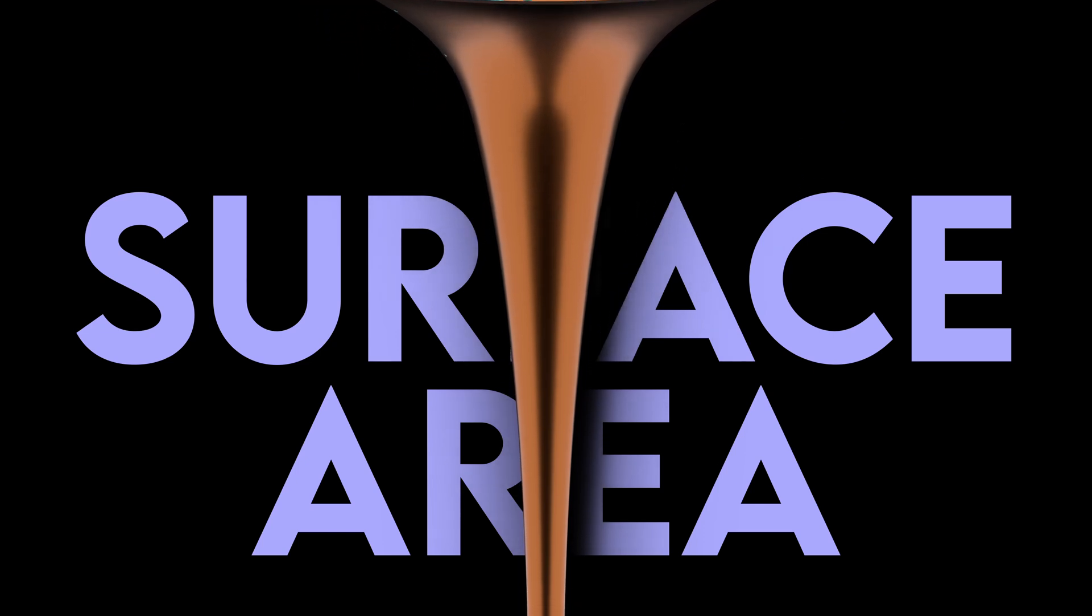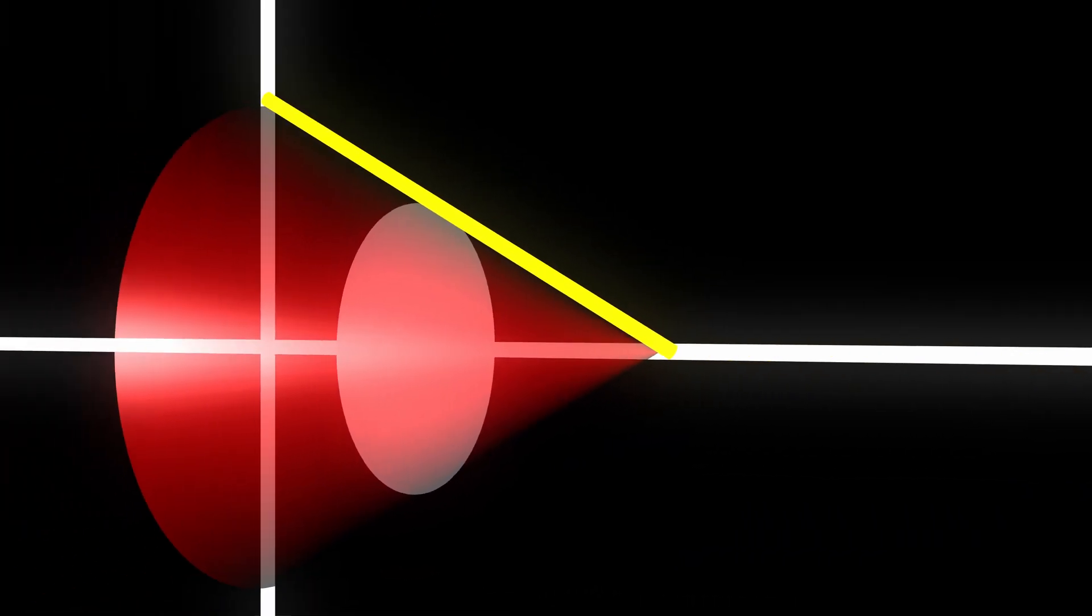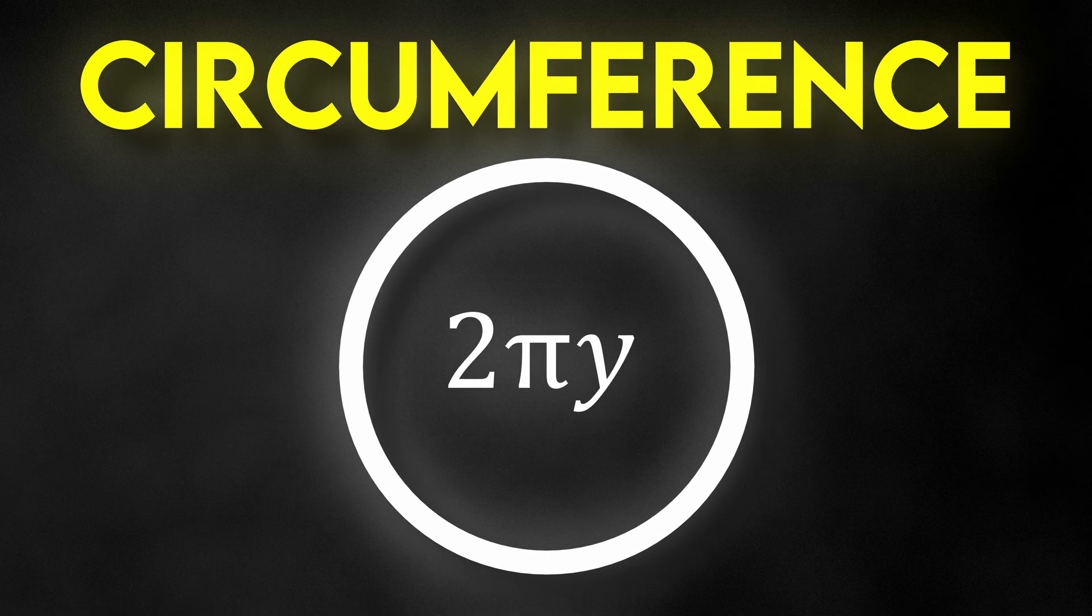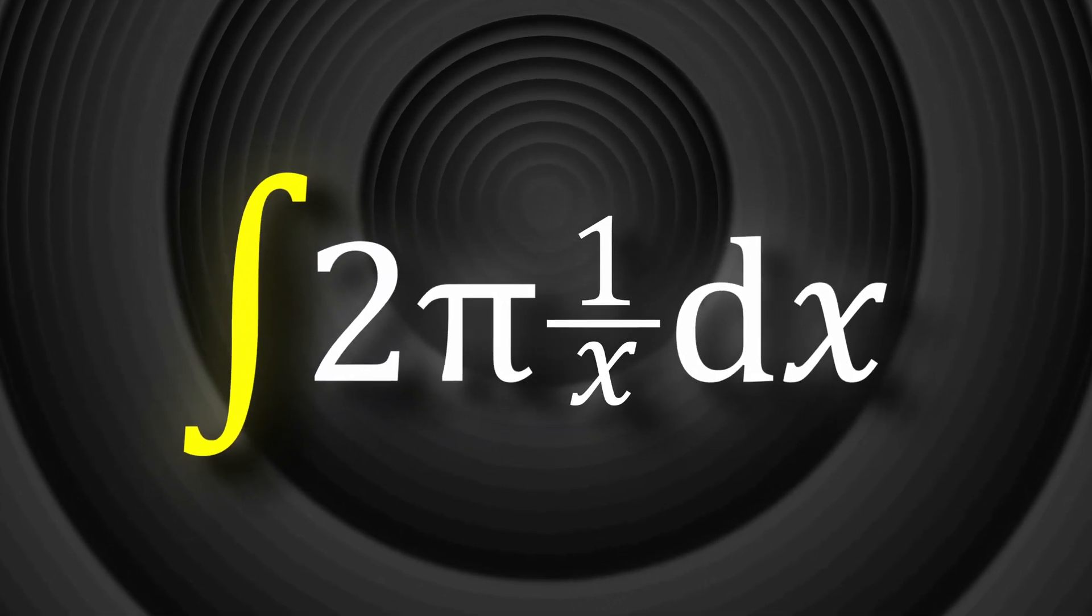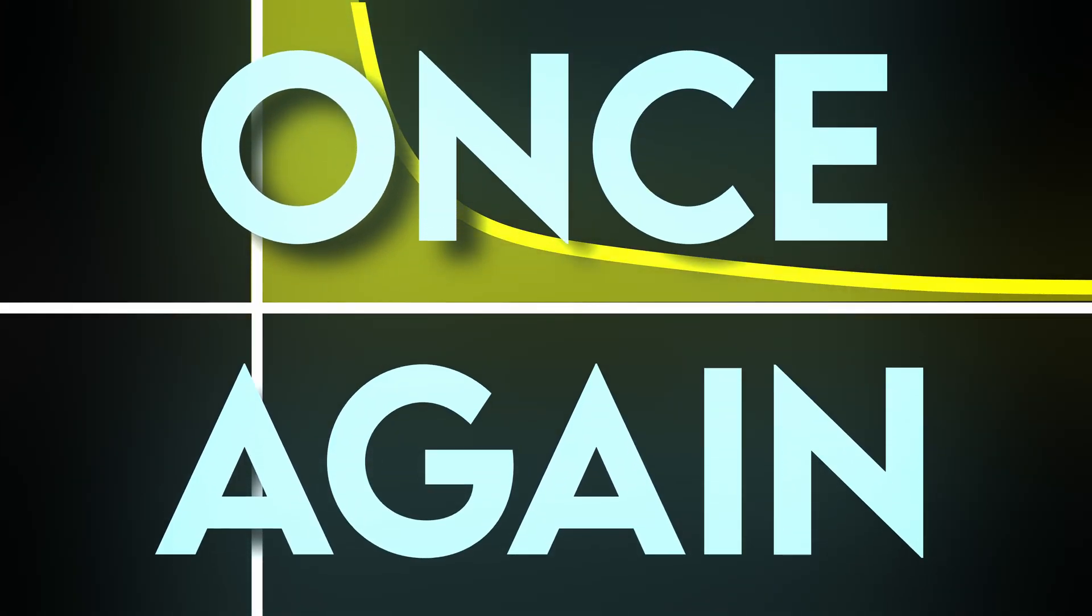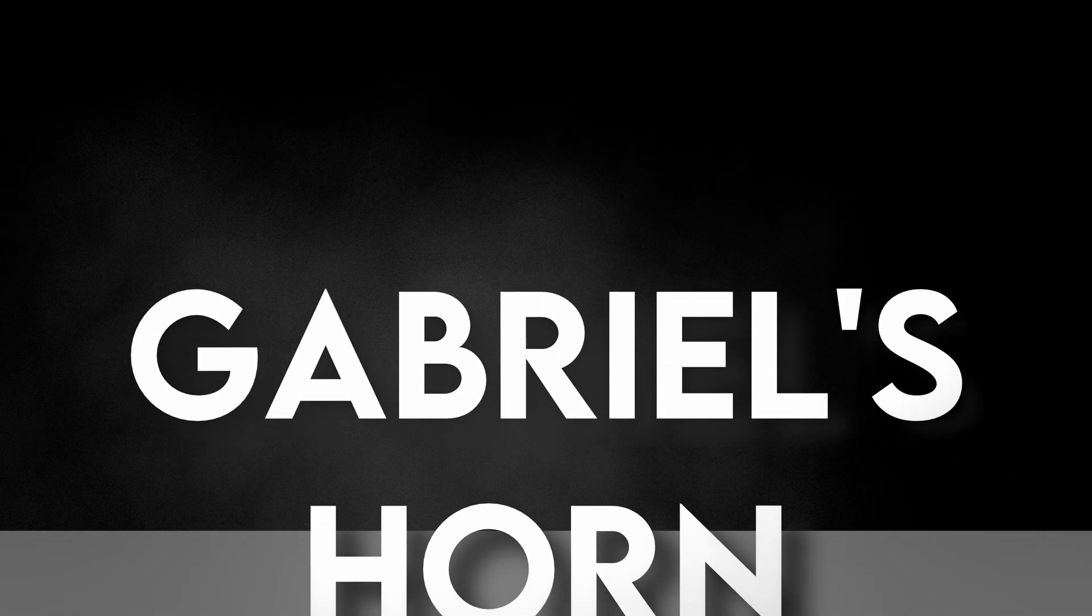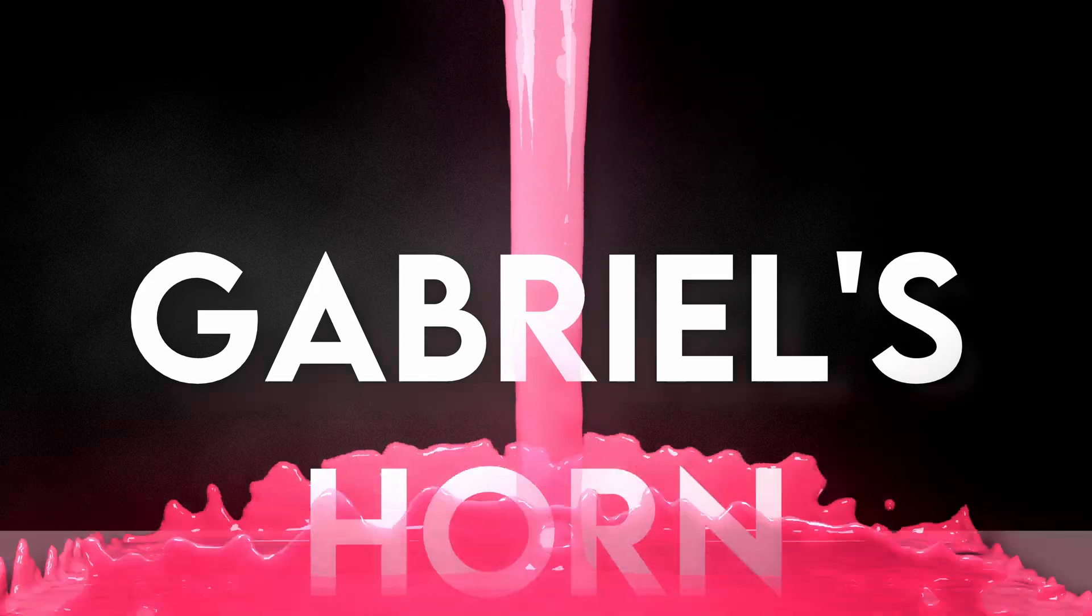Let's take the formula for volume derived previously and make one simple change. Replace the area of a circle with the circumference. When we apply this modified formula for surface area, we see that 1 over x is no longer squared, leading it to exhibit the same divergence once again. And there you have it, a simple proof of Gabriel's horn.